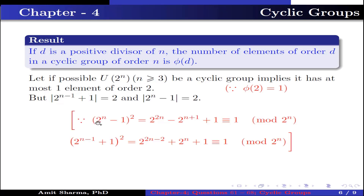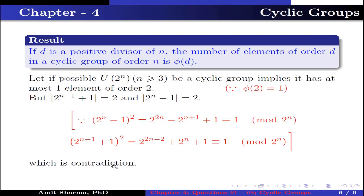To verify: (2^(n−1) − 1)² = 2^(2n−2) − 2^n + 1 ≡ 1 (mod 2^n). Similarly, (2^(n−1) + 1)² = 2^(2n−2) + 2^n + 1 ≡ 1 (mod 2^n). Having two distinct elements of order 2 contradicts φ(2) = 1 for a cyclic group. Hence U(2^n) for n ≥ 3 is not a cyclic group.